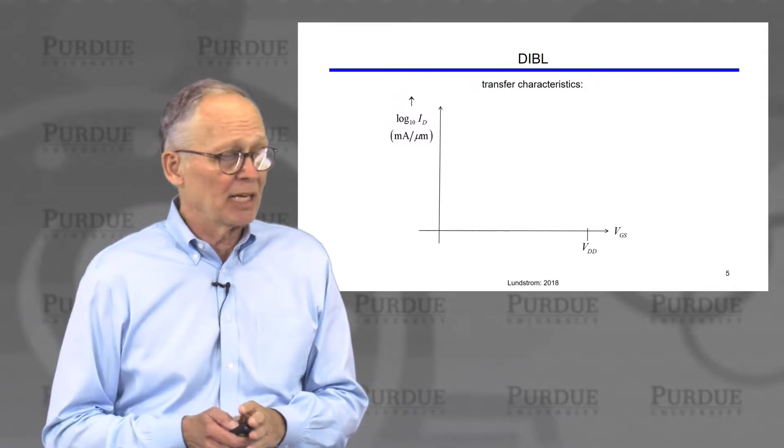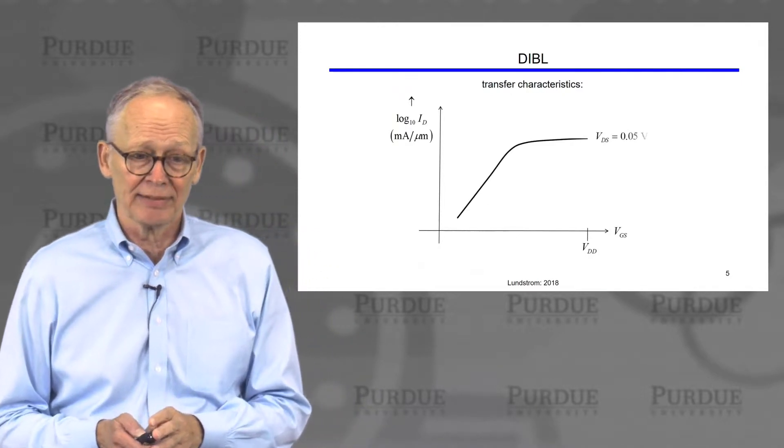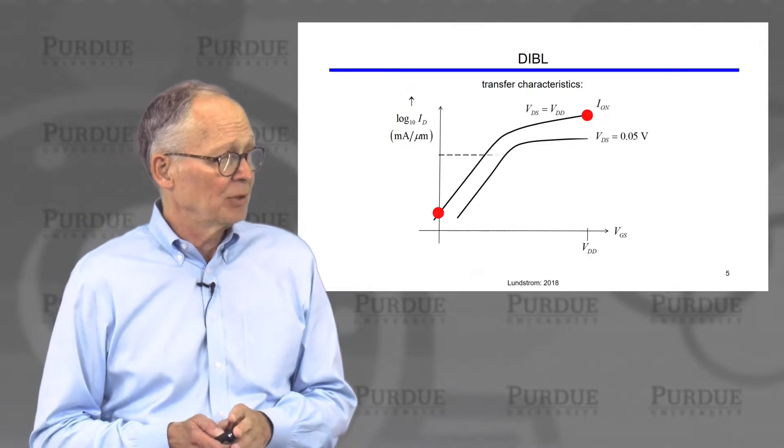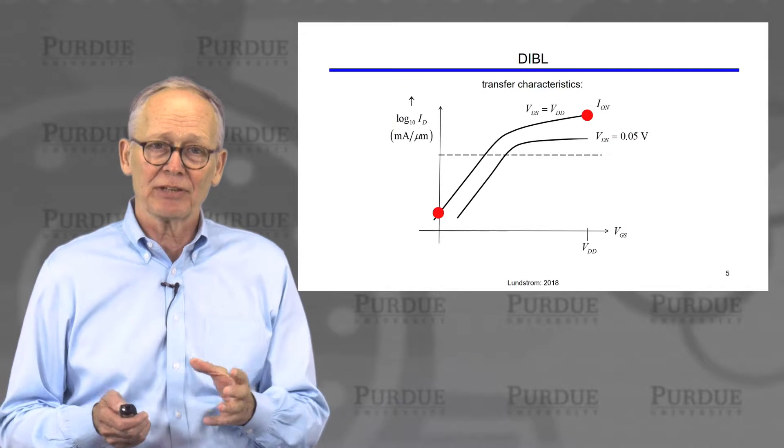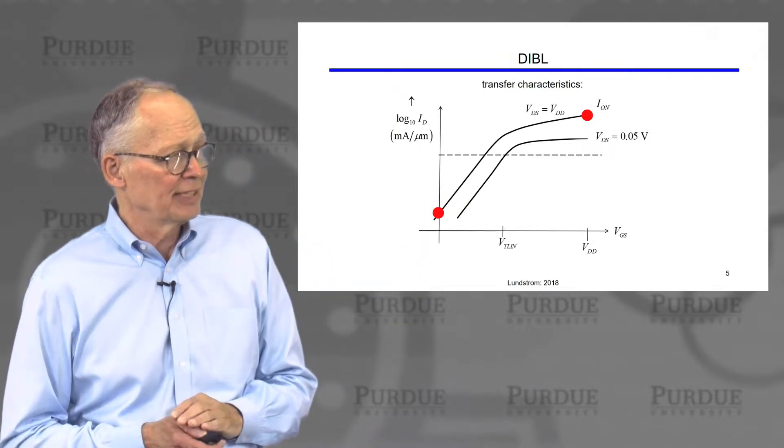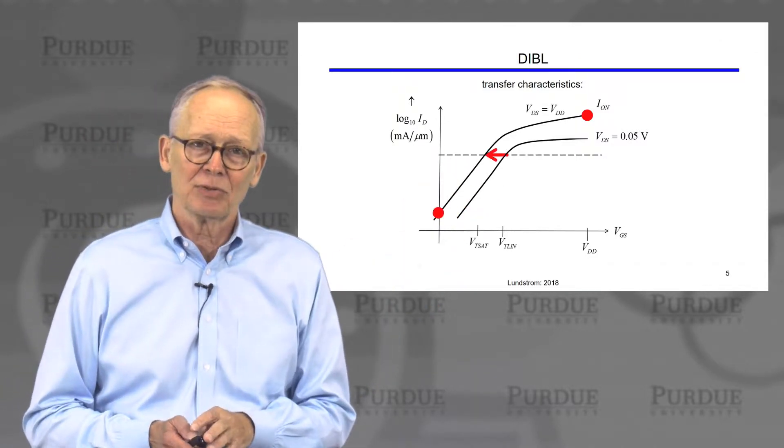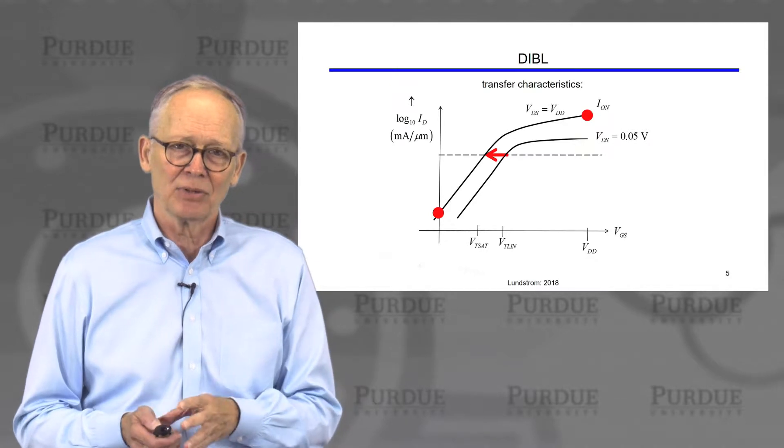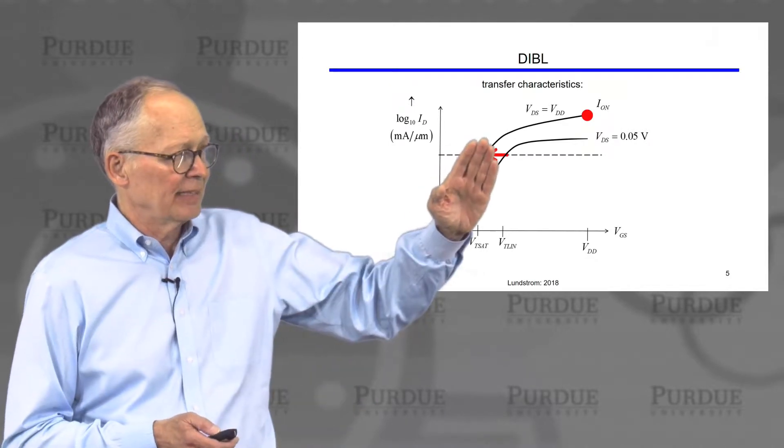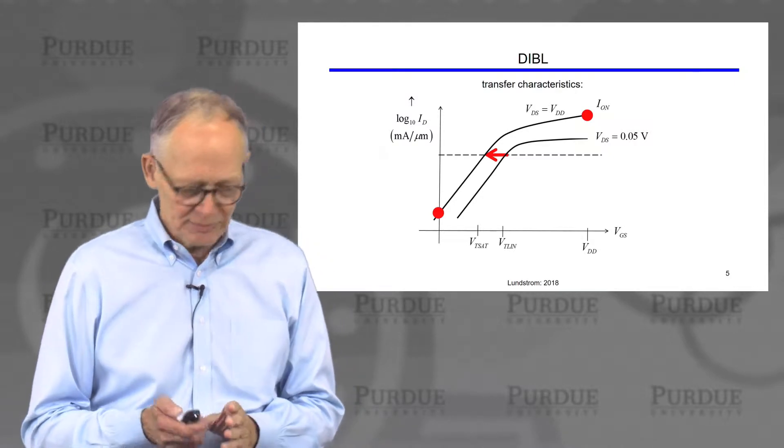We talked briefly then about how we can understand some things we discussed in unit one in terms of these energy band diagrams. For example, when we see the transfer characteristics plotted on a log plot, we remember how to extract DIBL, and DIBL is a reflection of the fact that the threshold voltage is decreasing as the drain voltage increases, so that leads to a translation of the transfer characteristic in the sub-threshold regime.